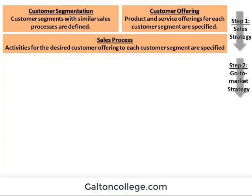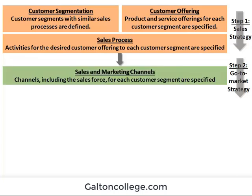Then we go to step two, the go-to-market strategy. Sales and marketing channels — channels including the sales force for each customer segment — are specified. Looking at how marketing channels should be arranged: face-to-face, where a sales representative speaks directly to the customer, is one such channel.